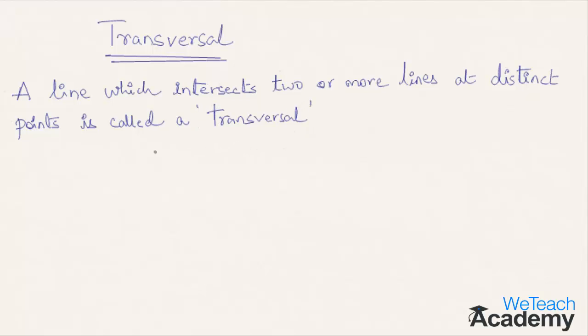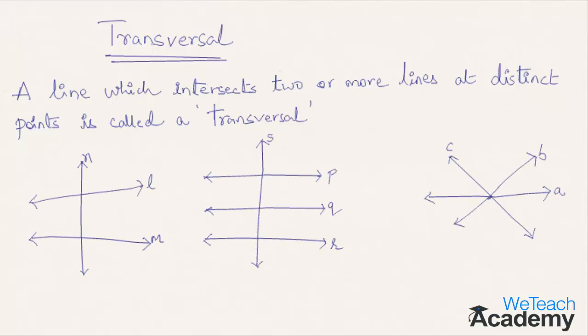Let me explain the same concept with the help of a few diagrams. Let's go with the first diagram. Here we have two lines l and m intersected by the third line n at two distinct points, which is here and here.